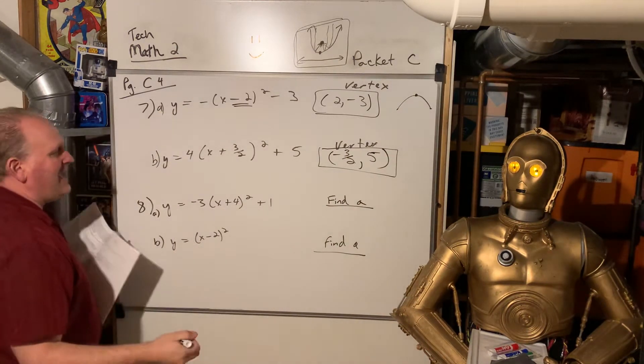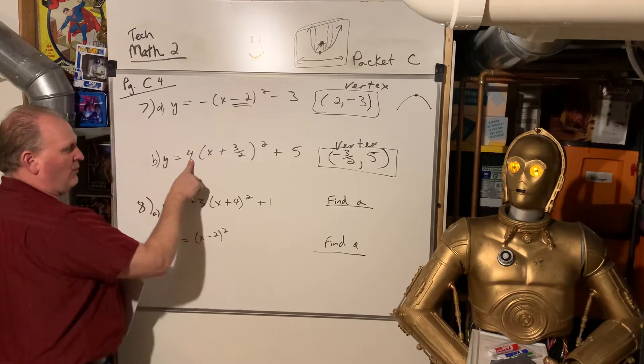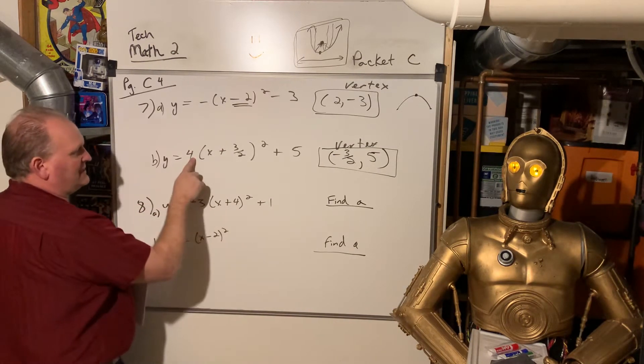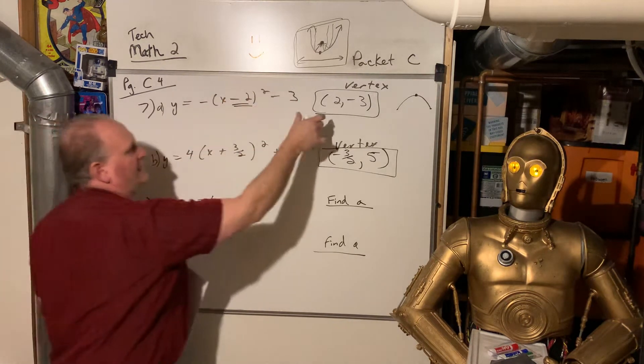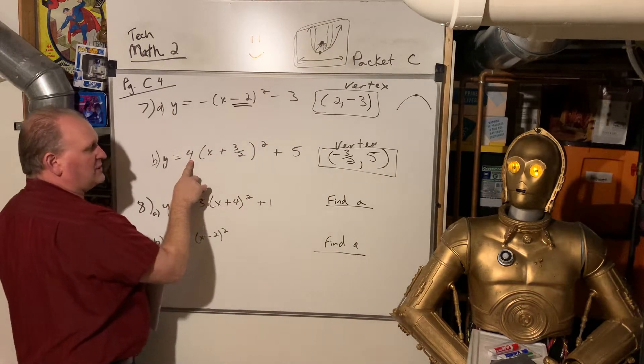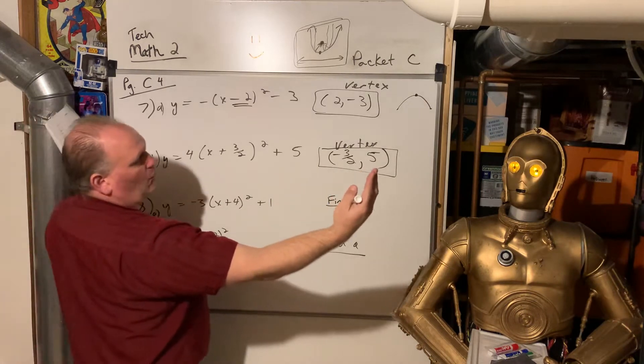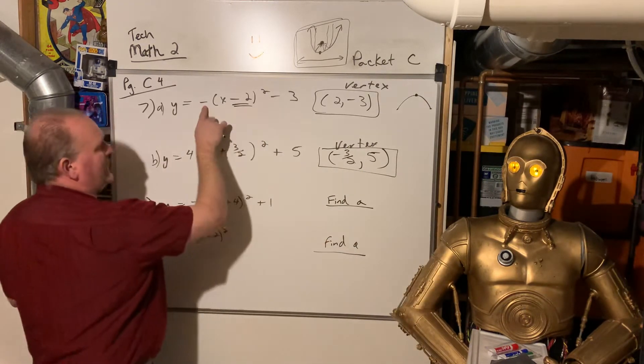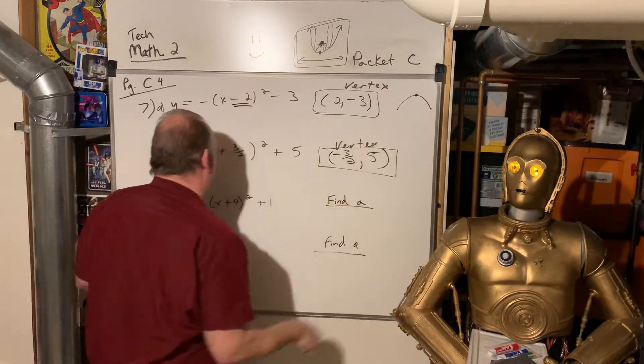It's not a lot of work to find the vertex when it's in vertex form because it's the opposite of that number for the x value, and that's the y value. Find A. A is a multiplier. This would have an A of negative 1, this would have an A of 4. If it's a number bigger than 1, it makes it skinnier, it stretches it. If that's a number between 0 and 1, like a fraction, it makes it wider. And if it's a negative number, it will open down instead of opening up.